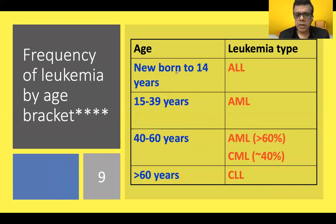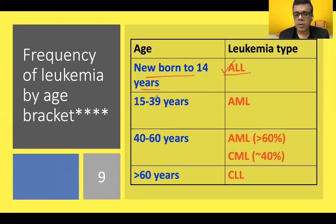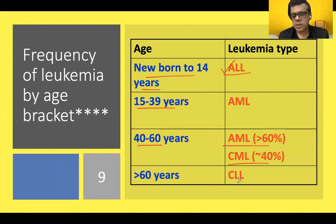Regarding frequency of leukemia by age group: from newborn to 14 years, ALL — particularly B-ALL — is most common. T cell ALL presents in adults as a mediastinal mass. AML is most commonly seen from 15 to 39 years, and also in the 40 to 60 age group, where CML is also common. Above 60 years, CLL is the predominant leukemia. Remembering these age groups helps in solving many exam questions.